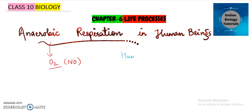One thing you should definitely know is that human beings are not anaerobic. Human beings are aerobic, means they require oxygen for their survival. But whenever there is oxygen scarcity or oxygen is less than what is required by our body, then at that time anaerobic respiration occurs.